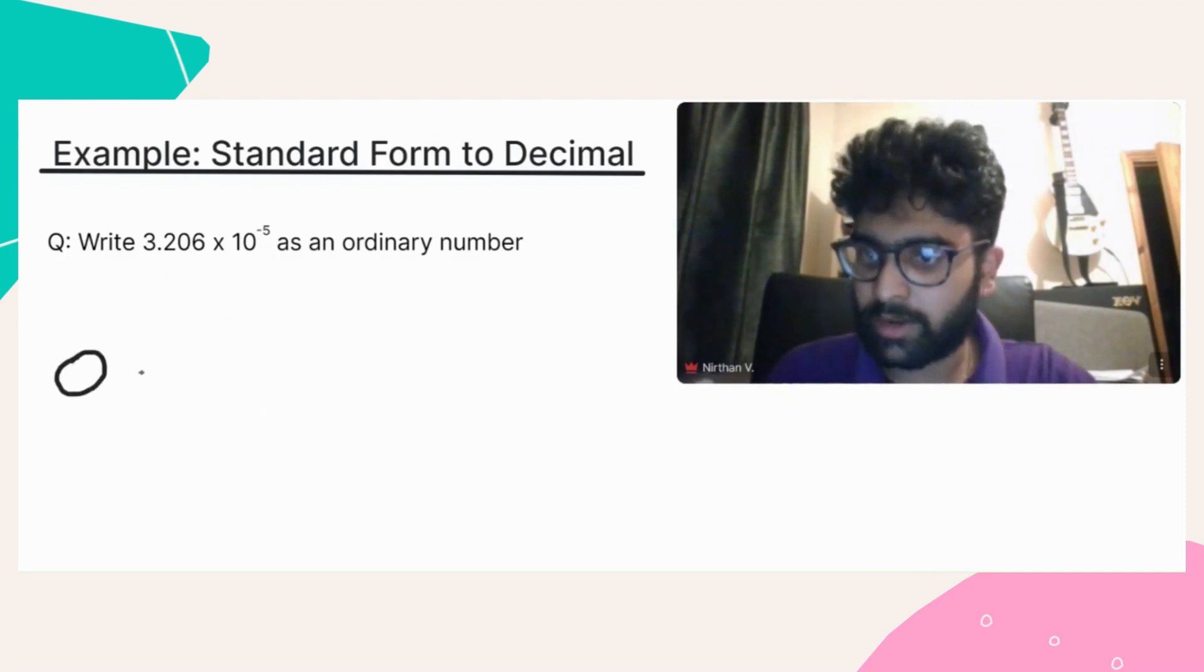So here it's 5, so we write down five zeros, and we put a decimal point after the first zero, like so.